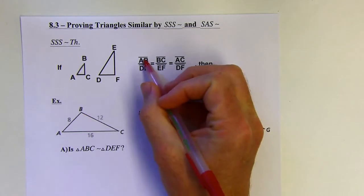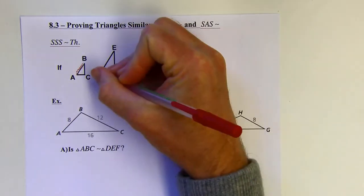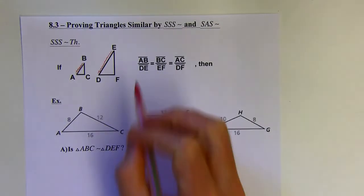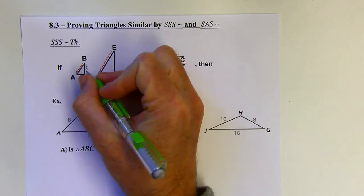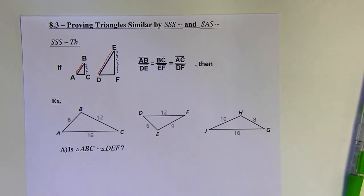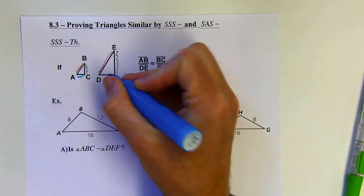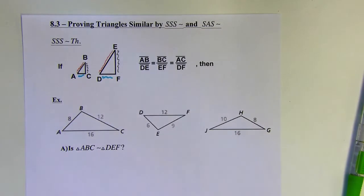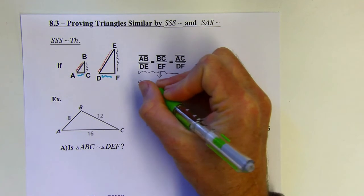This says AB is to DE as BC is to EF. BC and EF are the right sides of those triangles, and then those are in proportion to AC and DF. You can see the second triangle is bigger, but those sides are going to be in proportion. So this is really saying that the sides are in proportion for all three pairs.